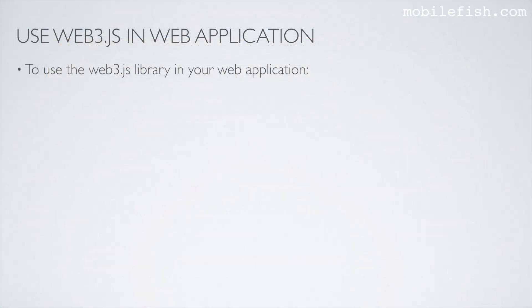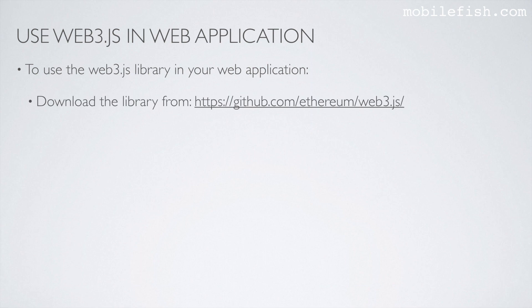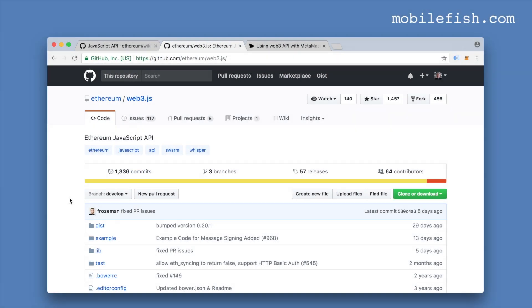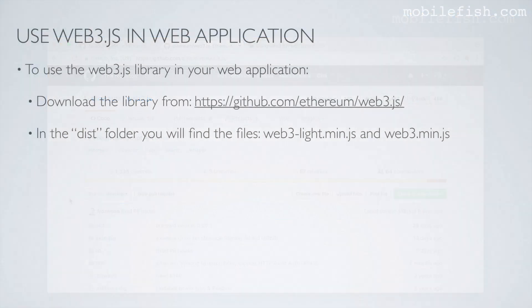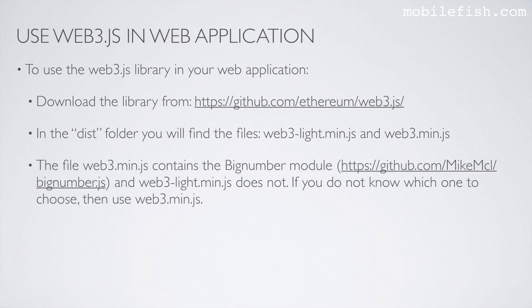To use the Web3.js library in your web application, download the library from this location. In the distribution folder, you will find the files web3.light.minify.js and web3.minify.js. The file web3.minify.js contains the big number module, and web3.light.minify.js does not. If you do not know which one to choose, use web3.minify.js.